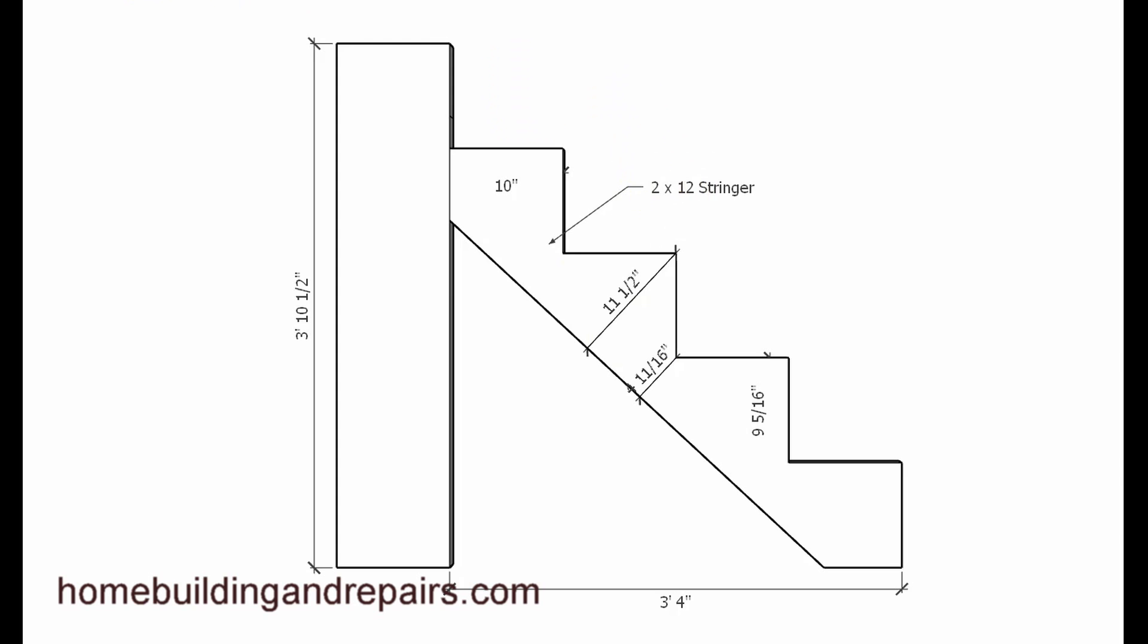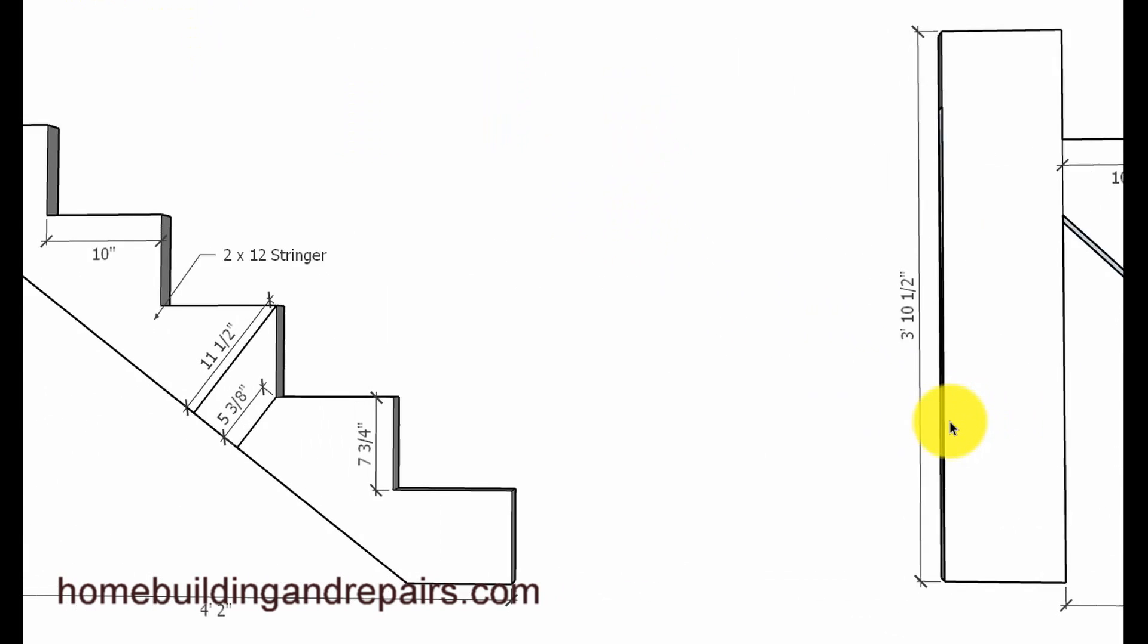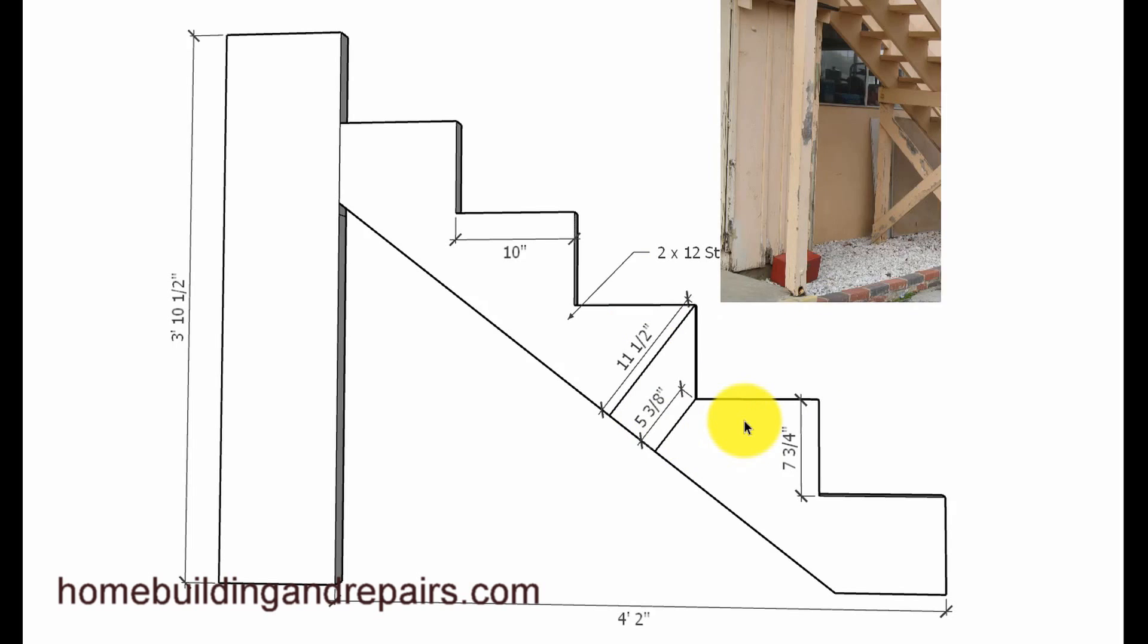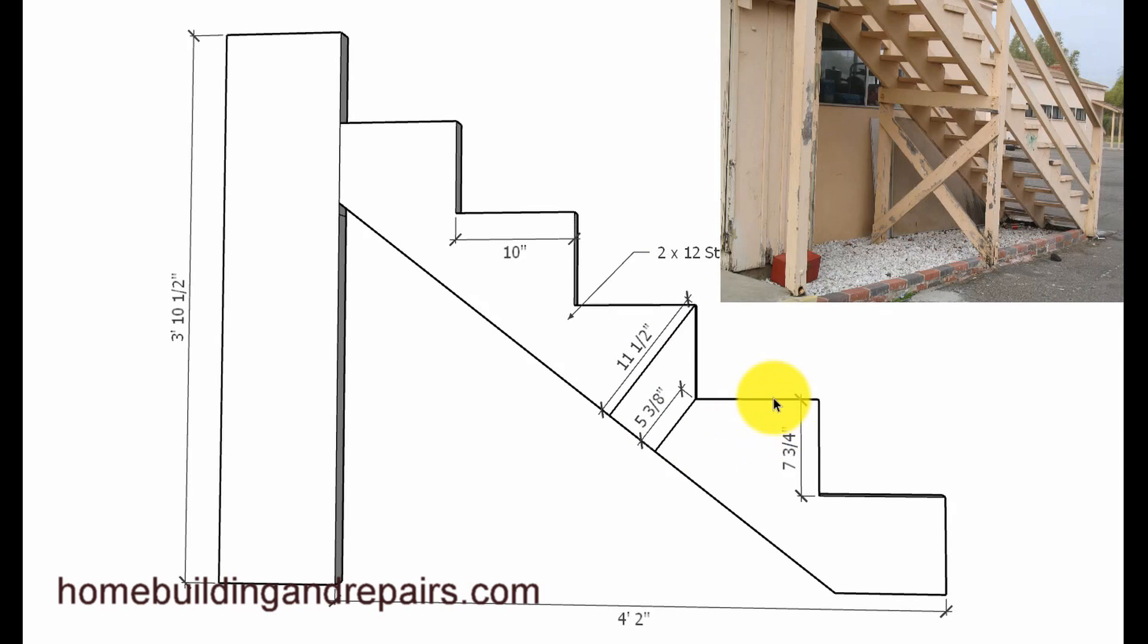If it's going to be a little longer, this would need to be two by fourteen. Again, two by twelve, ten inch treads, seven and three-quarter riser this time. This leaves us with five and three-eighths, and these are the kinds of stairs like I was telling you about that I built a lot of.